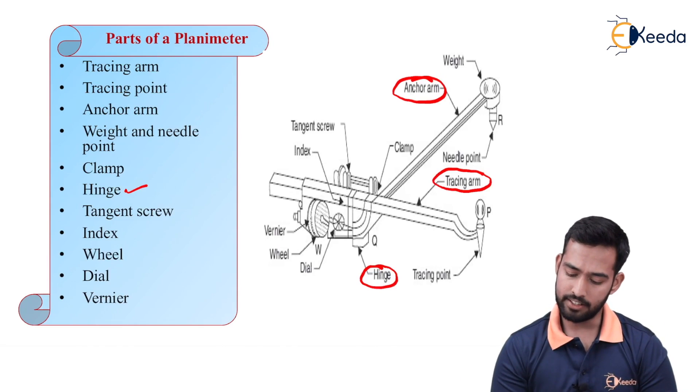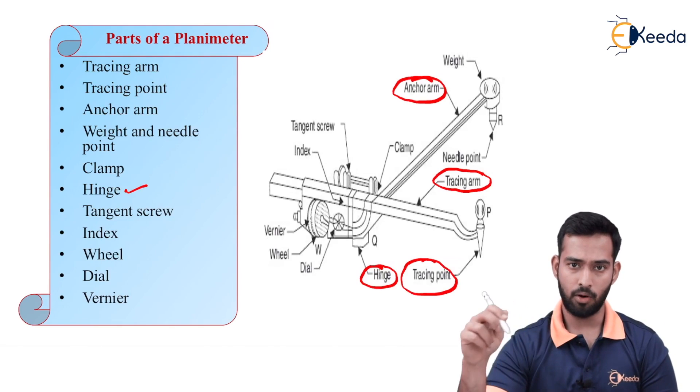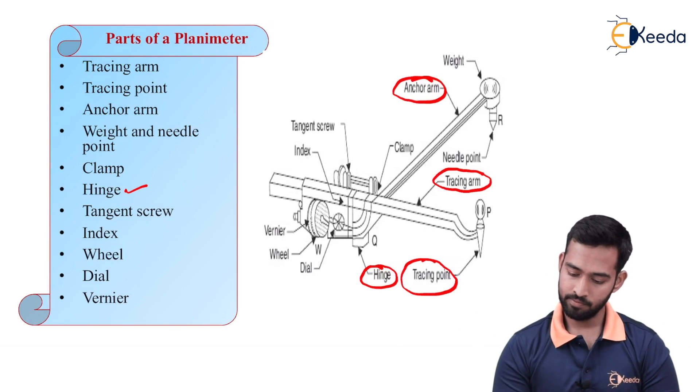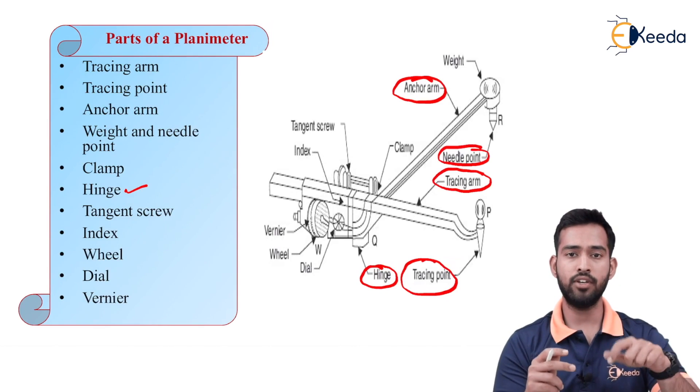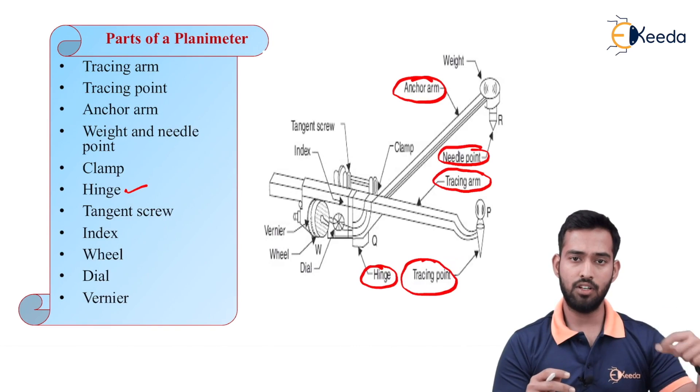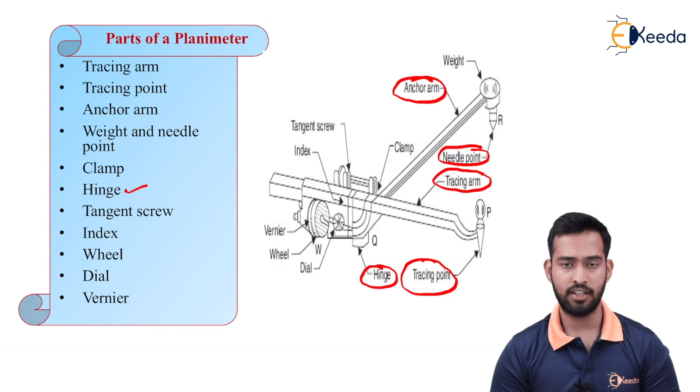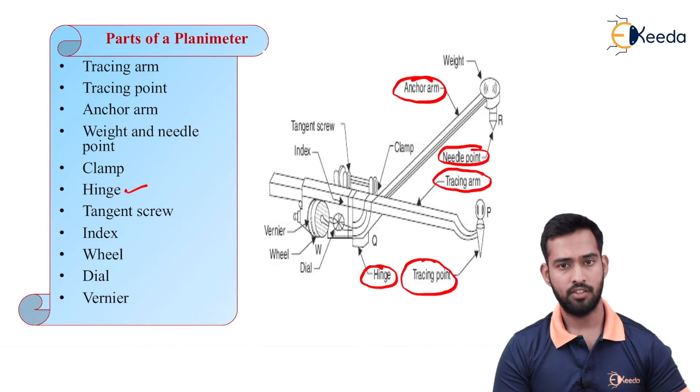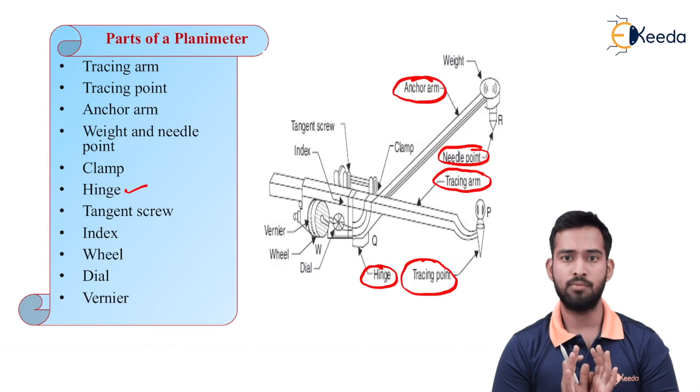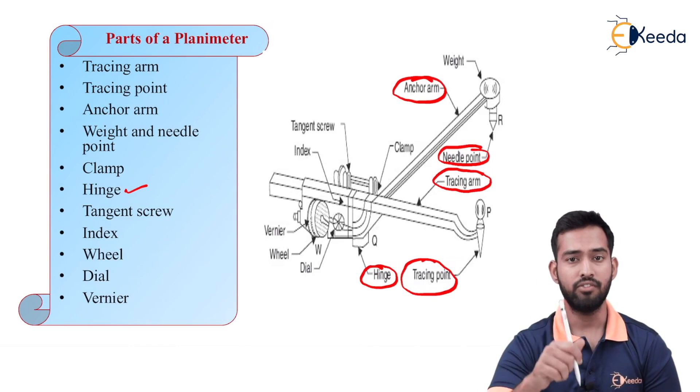Then, we have a tracing point which is used to trace the boundary of your figure. Then, we have a needle point which we have to fix outside the figure or inside the figure depending upon the size of the figure. If the size of the figure is small, the needle point will be outside the figure. If the size of the figure is large, the needle point will be inside the figure which is a fixed point.